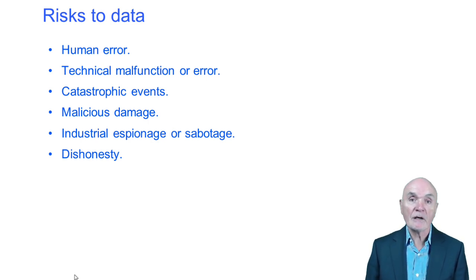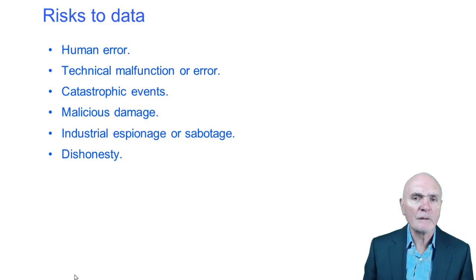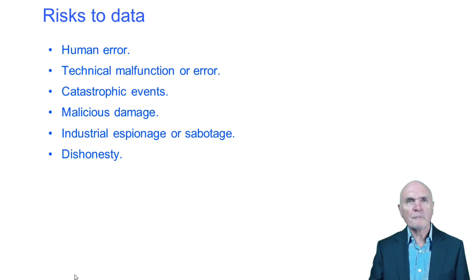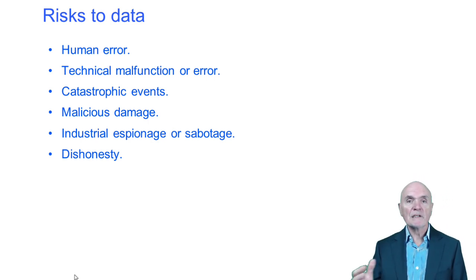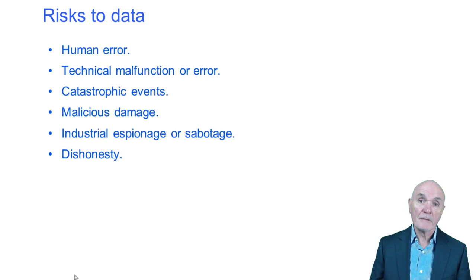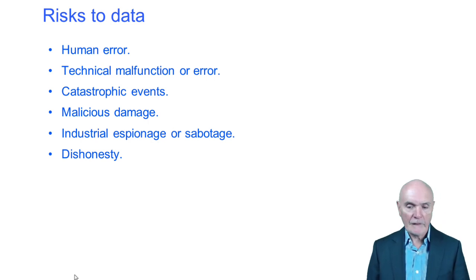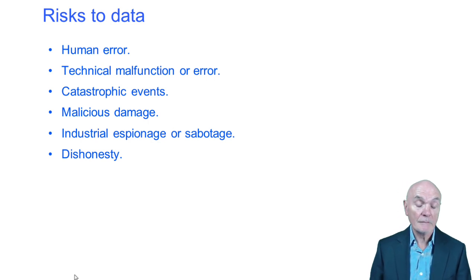The types of risks include human error — simply somebody typing in the wrong figure. For example, when trying to get a mortgage lifted, I supplied my date of birth and was told it was wrong. Obviously, there had been a human error in typing in my date of birth initially.